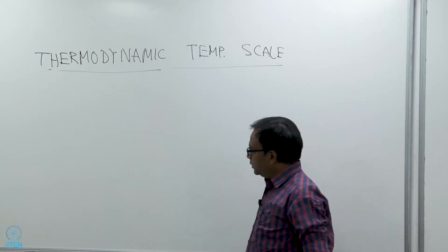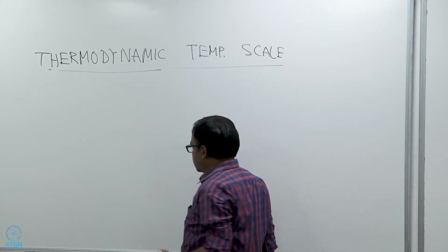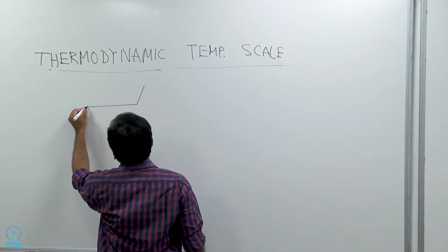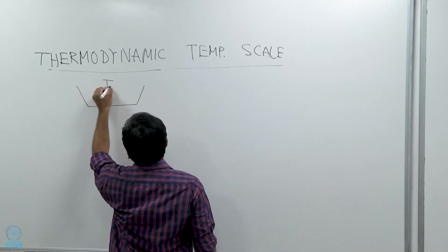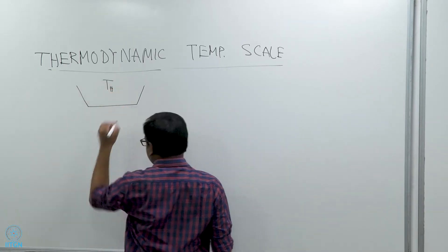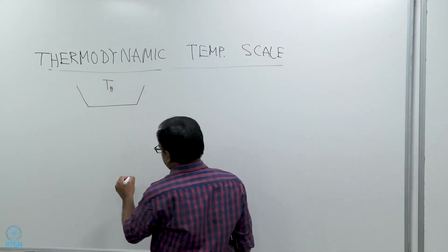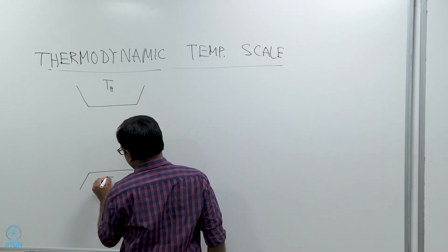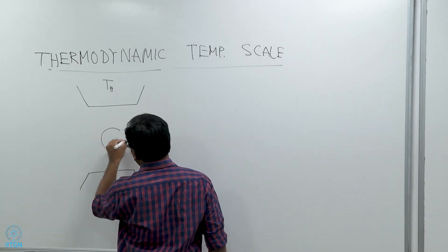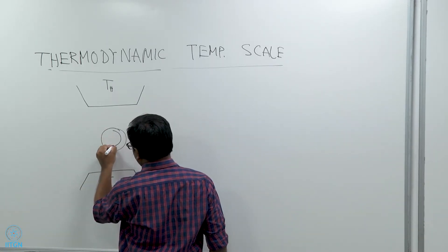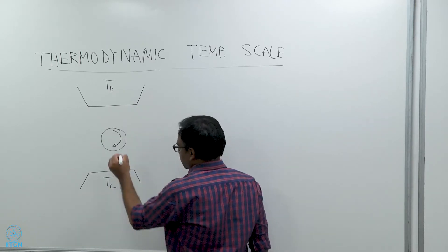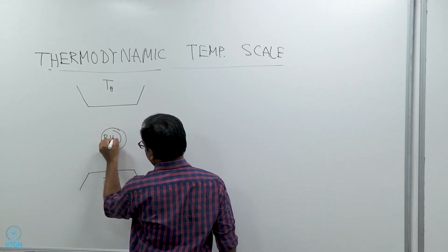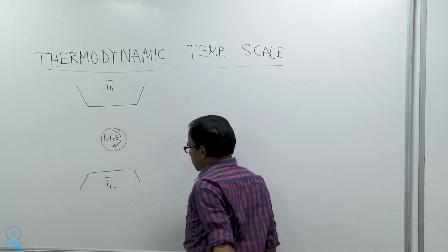We will start with a simple reversible heat engine. So you have a high temperature reservoir at temperature T_H, a low temperature reservoir at temperature T_L, and in between you have the heat engine working in a cycle. This is a reversible heat engine — RHE.